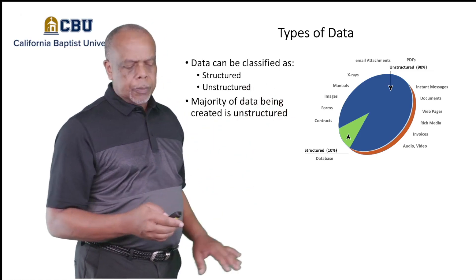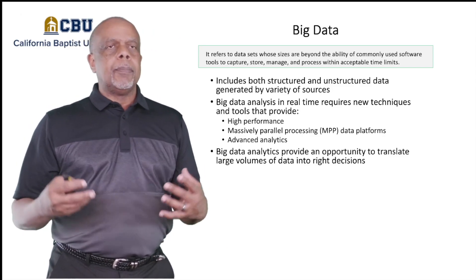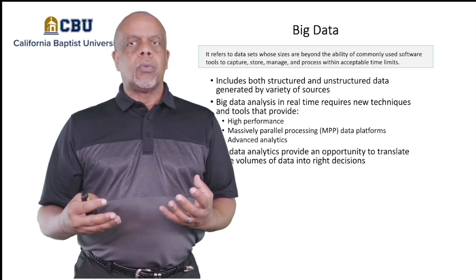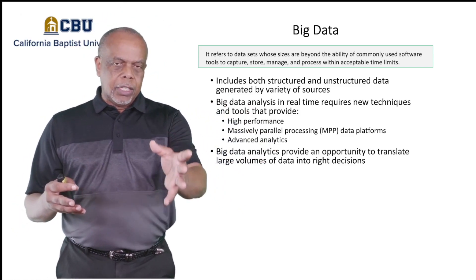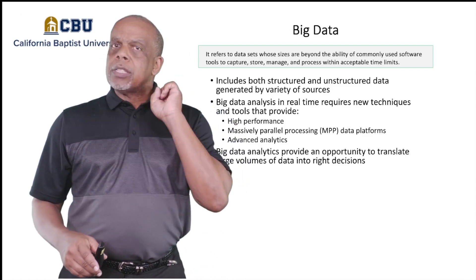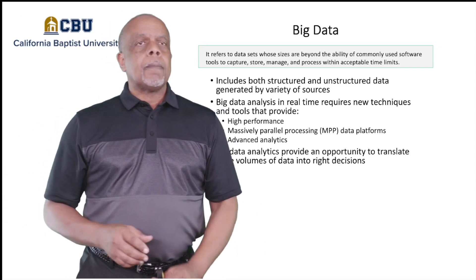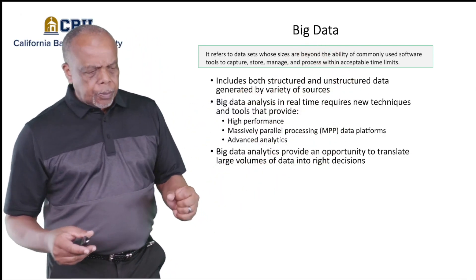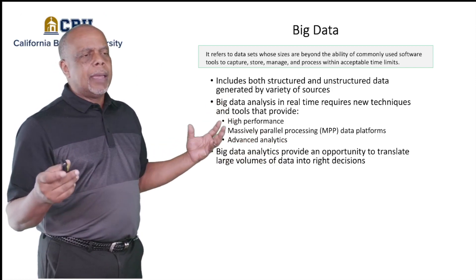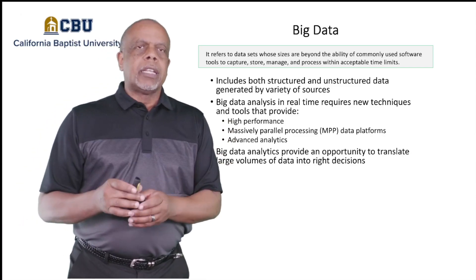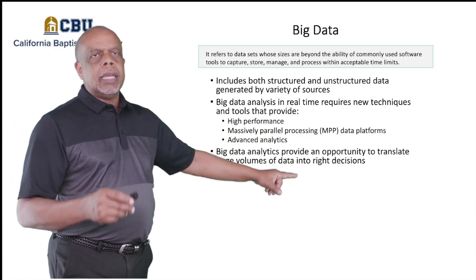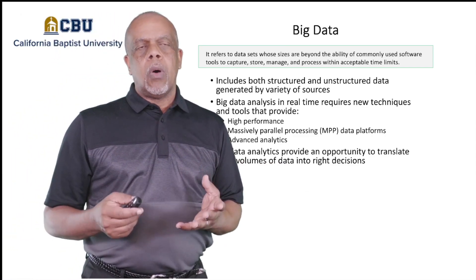Two types of data: structured, unstructured. In this class we're going to talk about big data. What is big data? Really it is the massive amounts of data being generated every day. If you're on Facebook or any social media site and you search for one thing, before you know it you're getting ads on every media platform for that thing you searched. All the metadata associated with that purchase is now cataloged, and we use high-performance tools like Hadoop to go in and extract information via data mining. Big data analytics provides the opportunity to translate large volumes of data into decision-quality, right decisions.